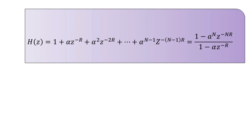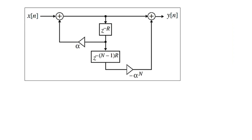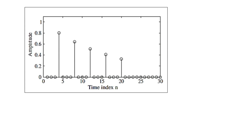The IIR (infinite impulse response) realization for this filter can be visualized with an illustration showing input x(n) and output y(n). The corresponding impulse response of the multiple echo filter with α = 0.8, N = 6, and delay R = 4 is shown, with time index n on the horizontal axis from 0 to 30 and amplitude from 0 to 1 on the vertical axis.